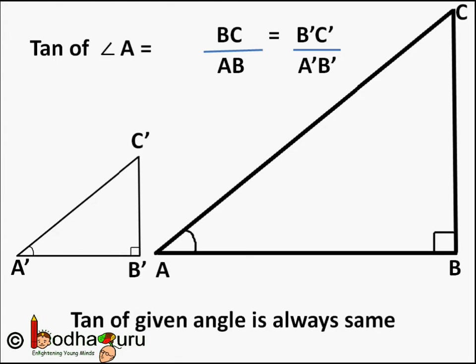So here you can see two triangles A'B'C' which is the smaller one on the left side and a bigger one ABC on the right side. And the angle A is the same. So when the angle is the same between these two triangles, the ratios of the opposite and adjacent side will be the same.